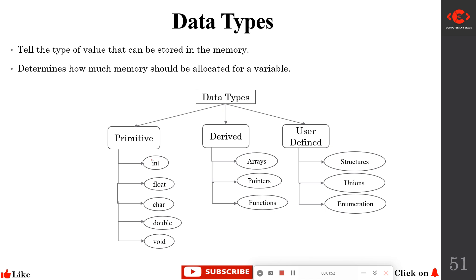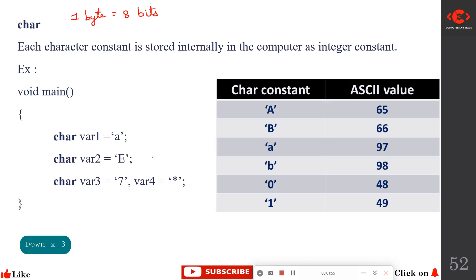Today we will learn primitive data types. First, we will learn char. Char can allocate only one byte of memory. One byte equals eight bits, and eight bits can be represented as zeros and ones.